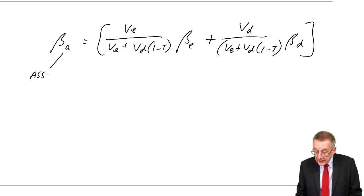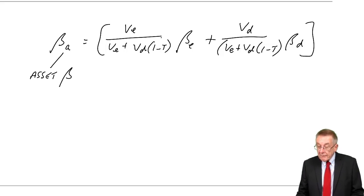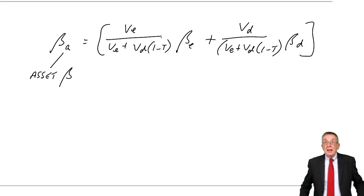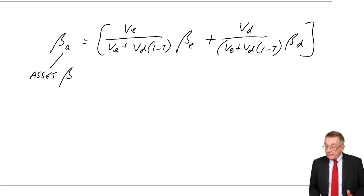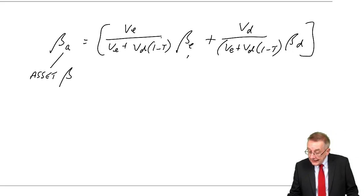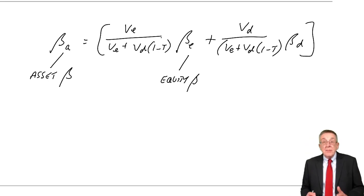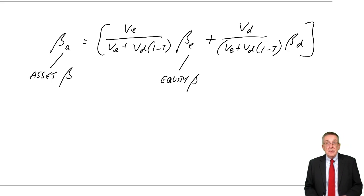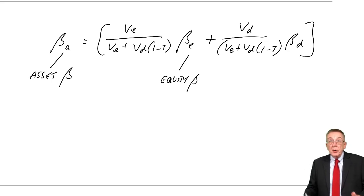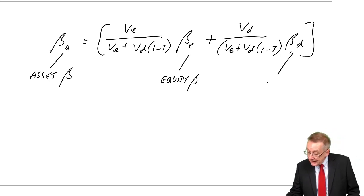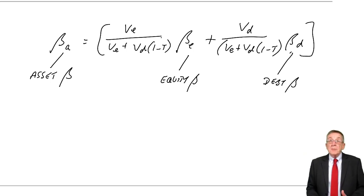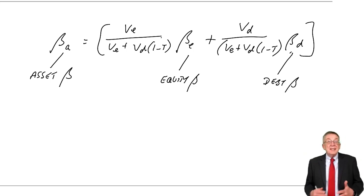BA is the asset beta — the beta of the business itself, ignoring any gearing. Beta E is the equity beta, the beta of a share in the business — remember, a share is more risky because of gearing. Beta D is the debt beta, which measures the riskiness of the debt.